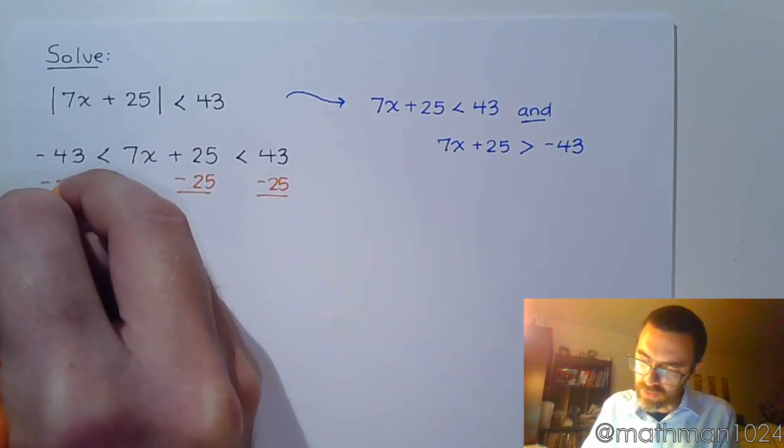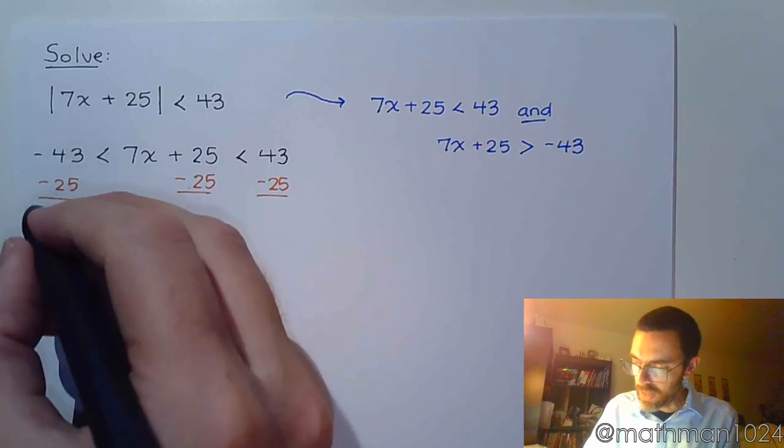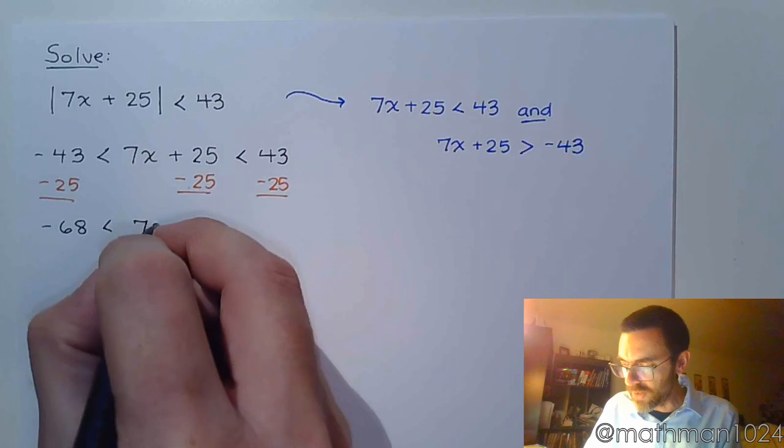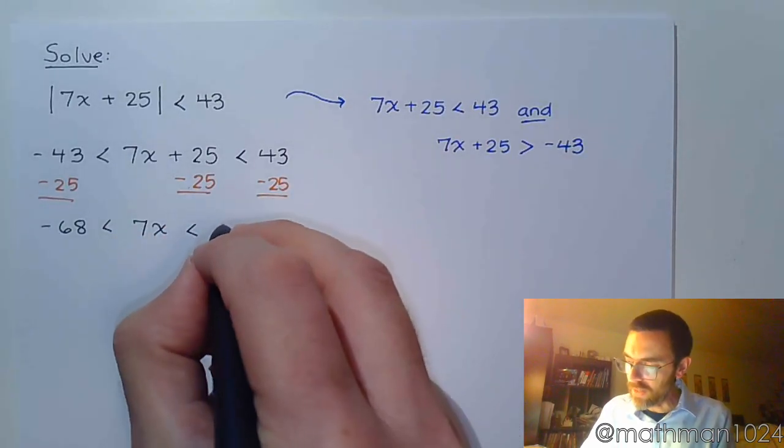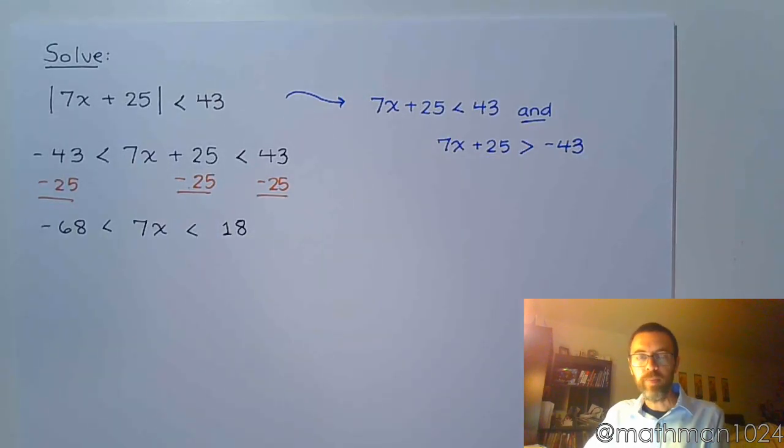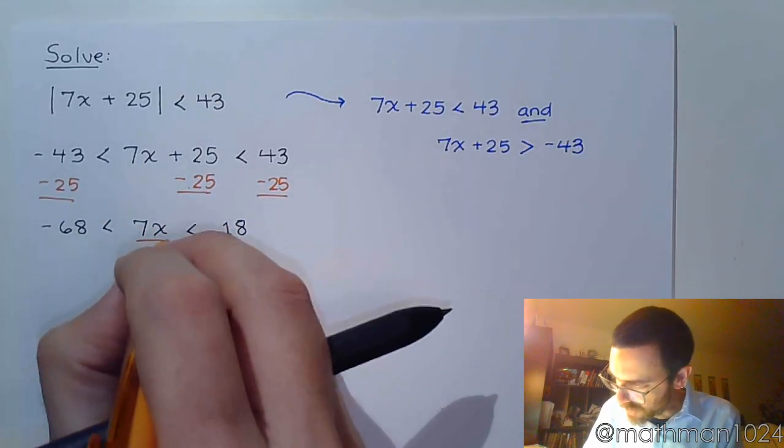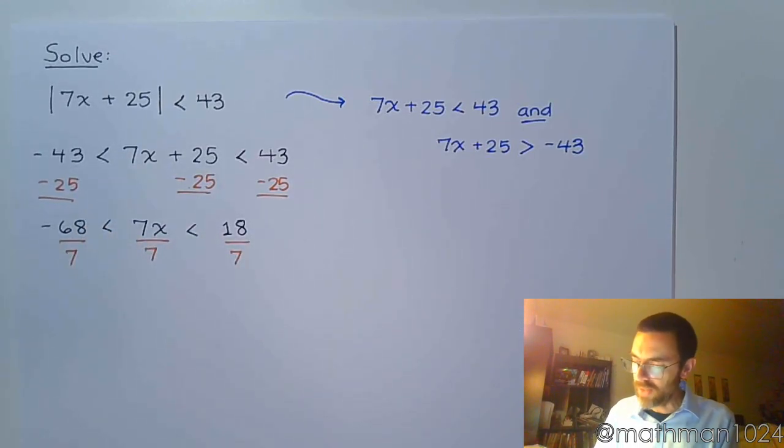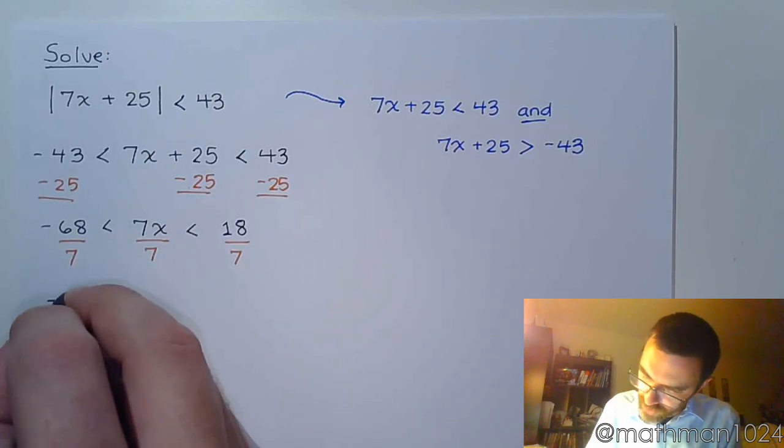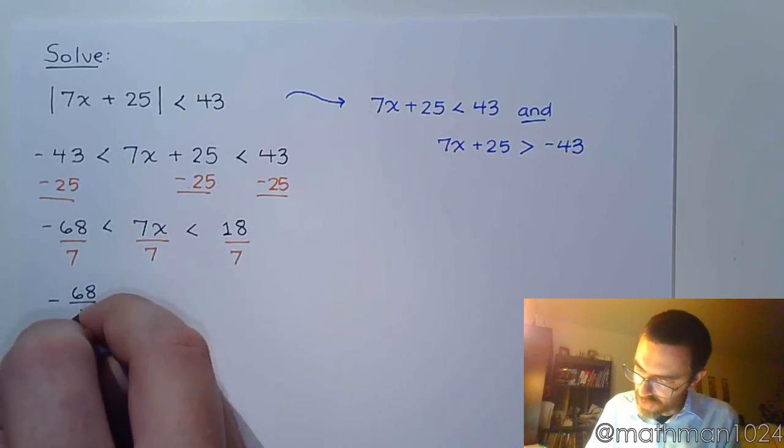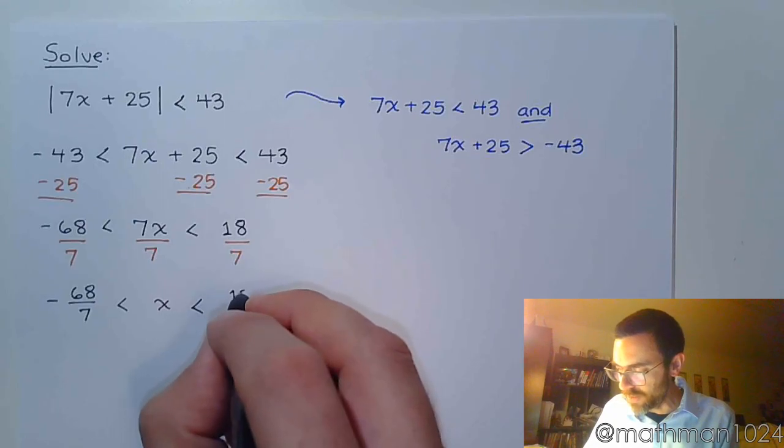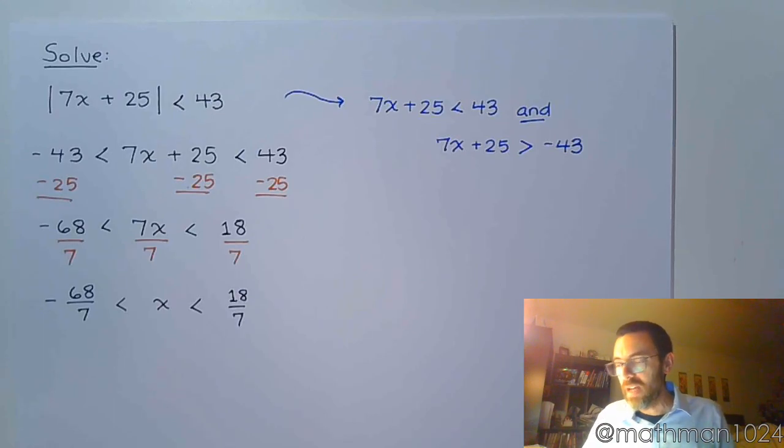So it's a nice, normal three-part inequality. So subtract 25 on all three parts. So we have negative 68 is less than 7x, which is less than 18. And then your final step here to get x by itself, divide everything by 7. Alright, so we have negative 68 over 7, which is less than x, which is less than 18 over 7. We could try to reduce, but none of these guys are going to simplify, so it stays just as it is.